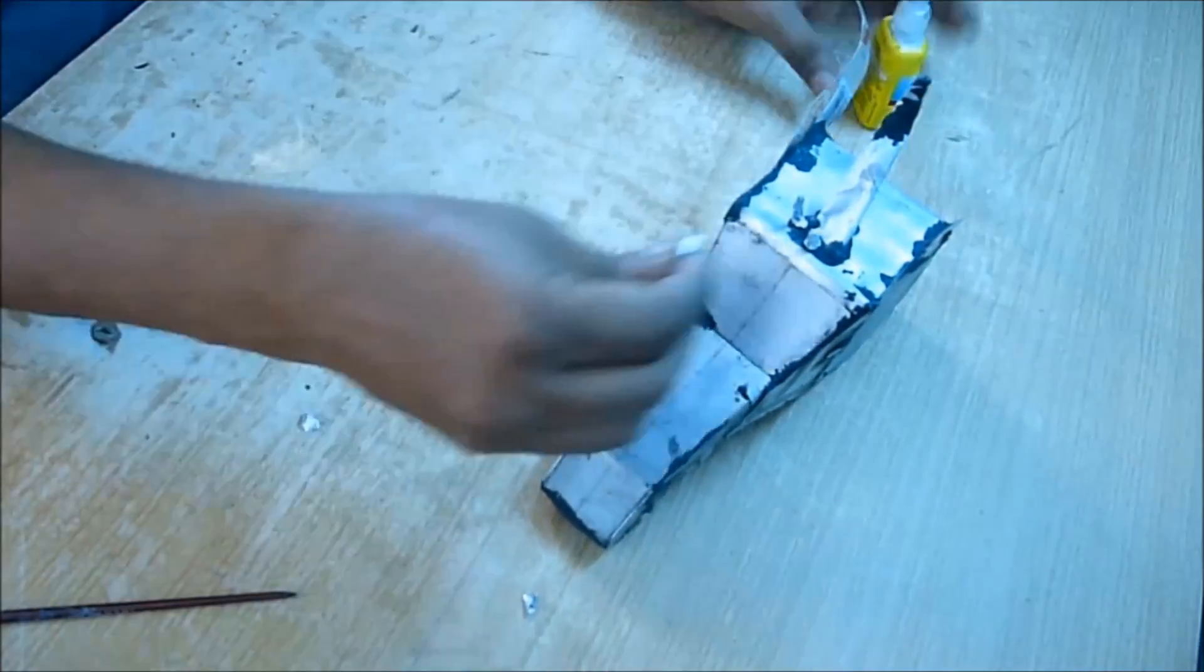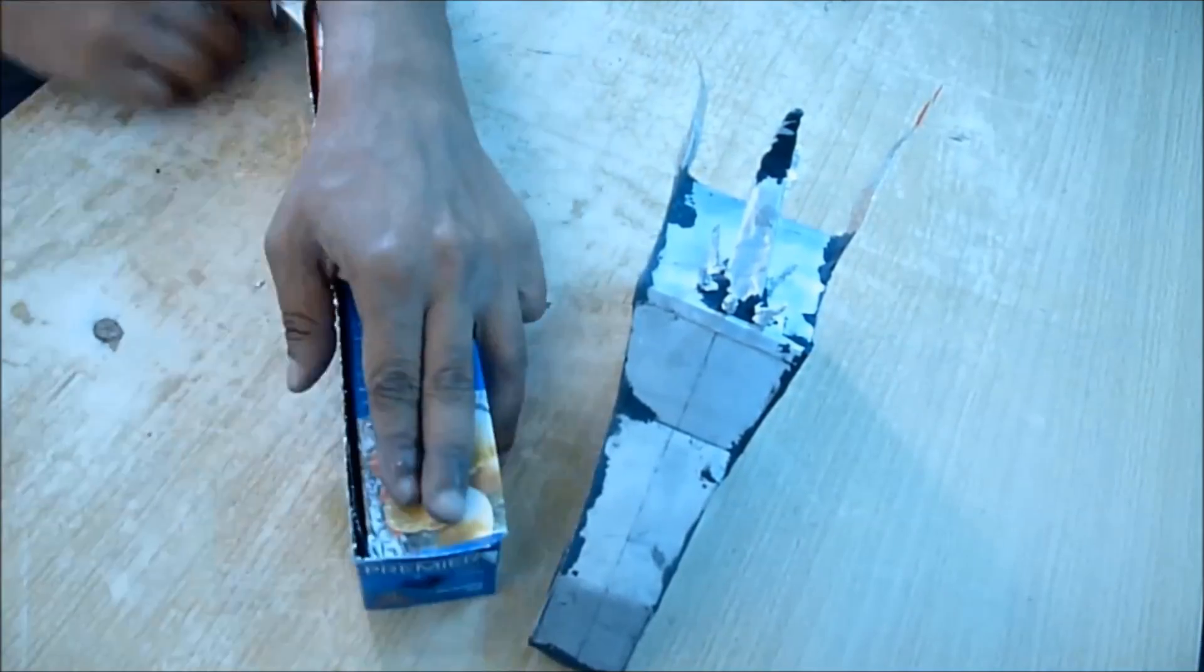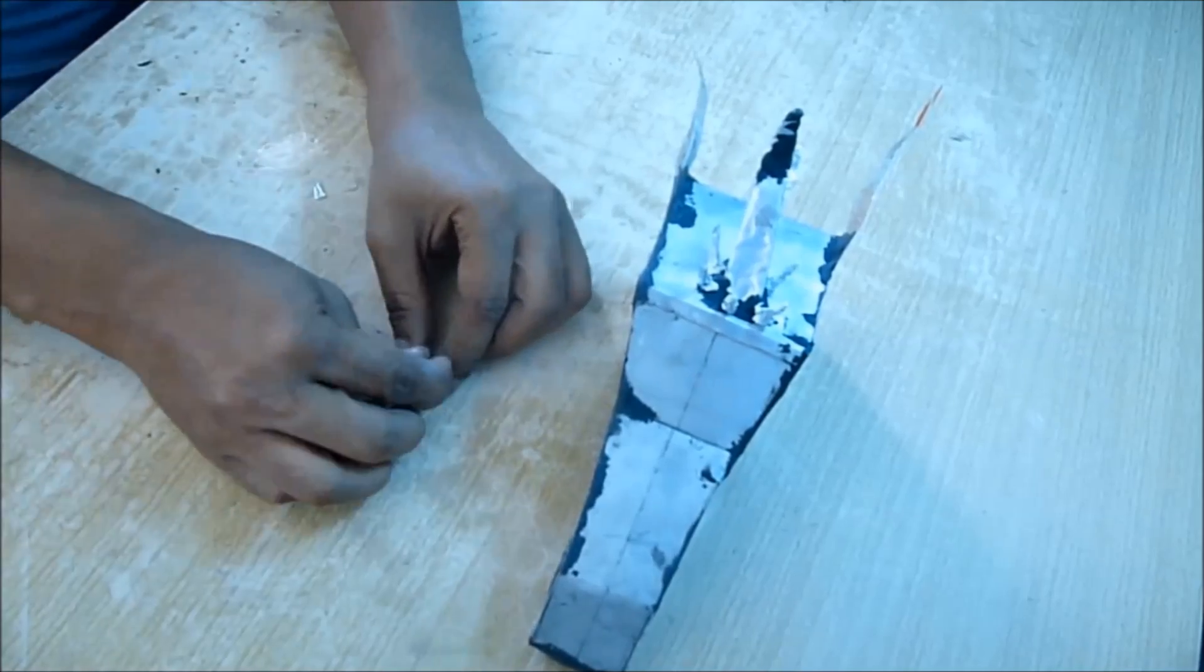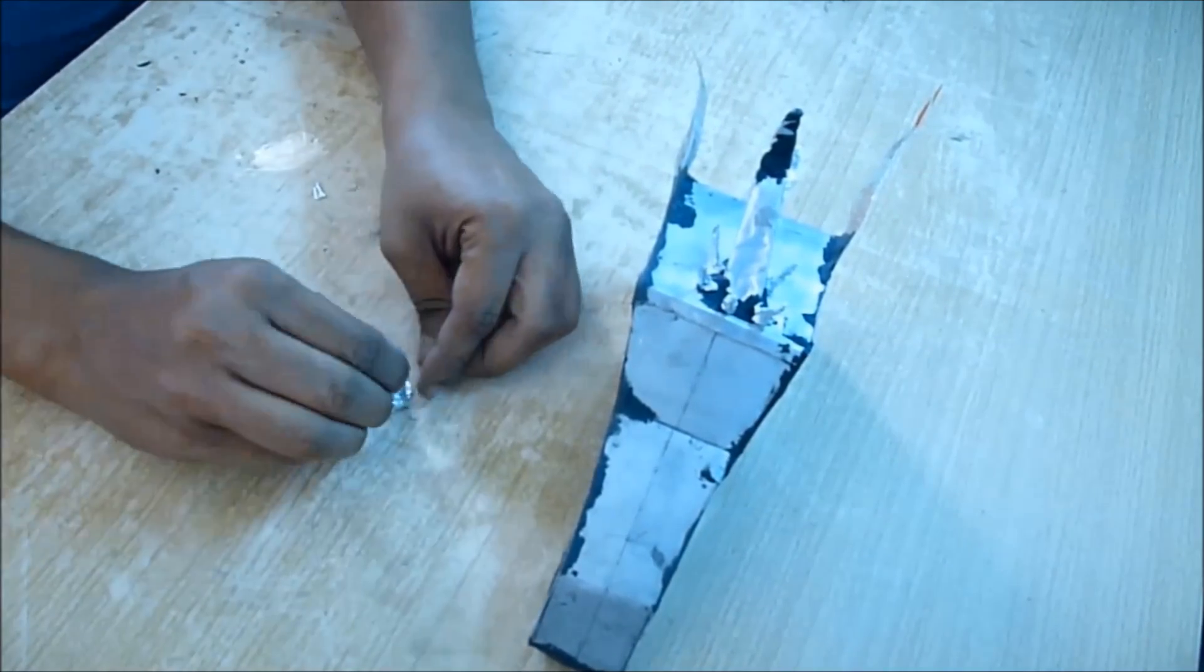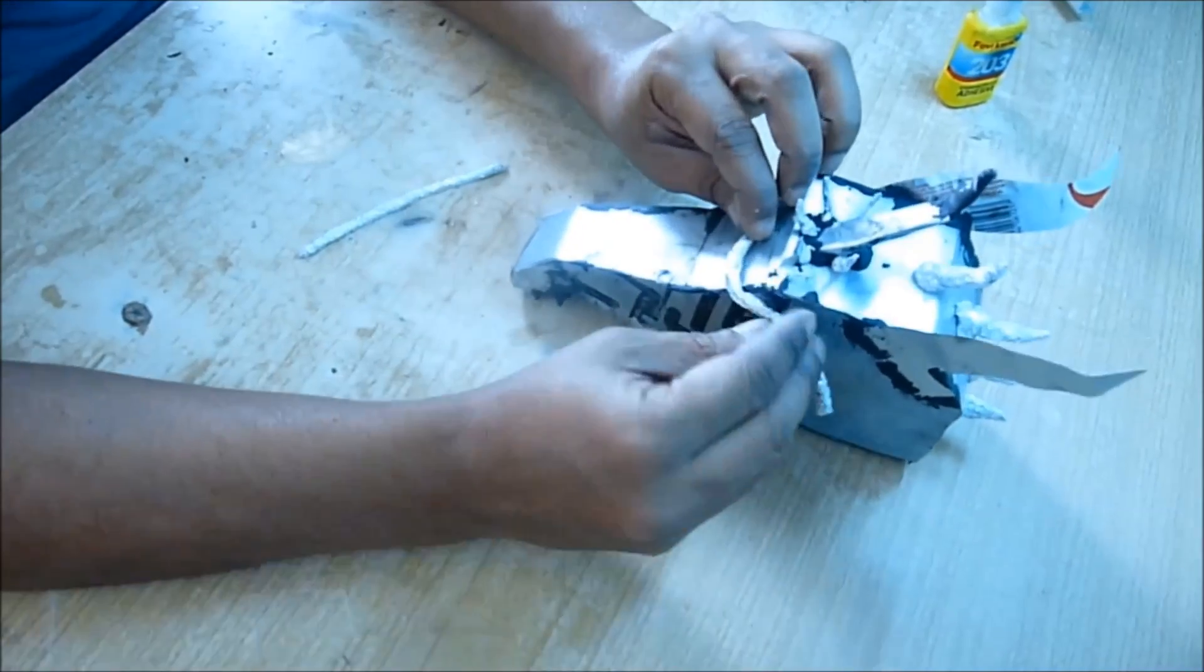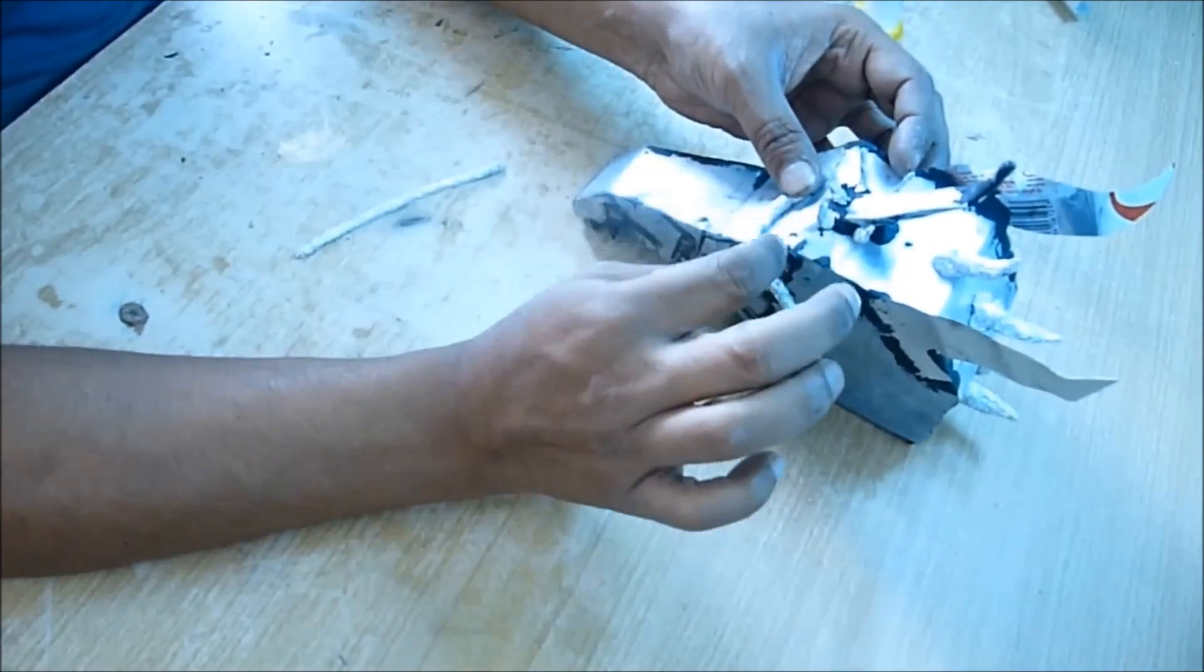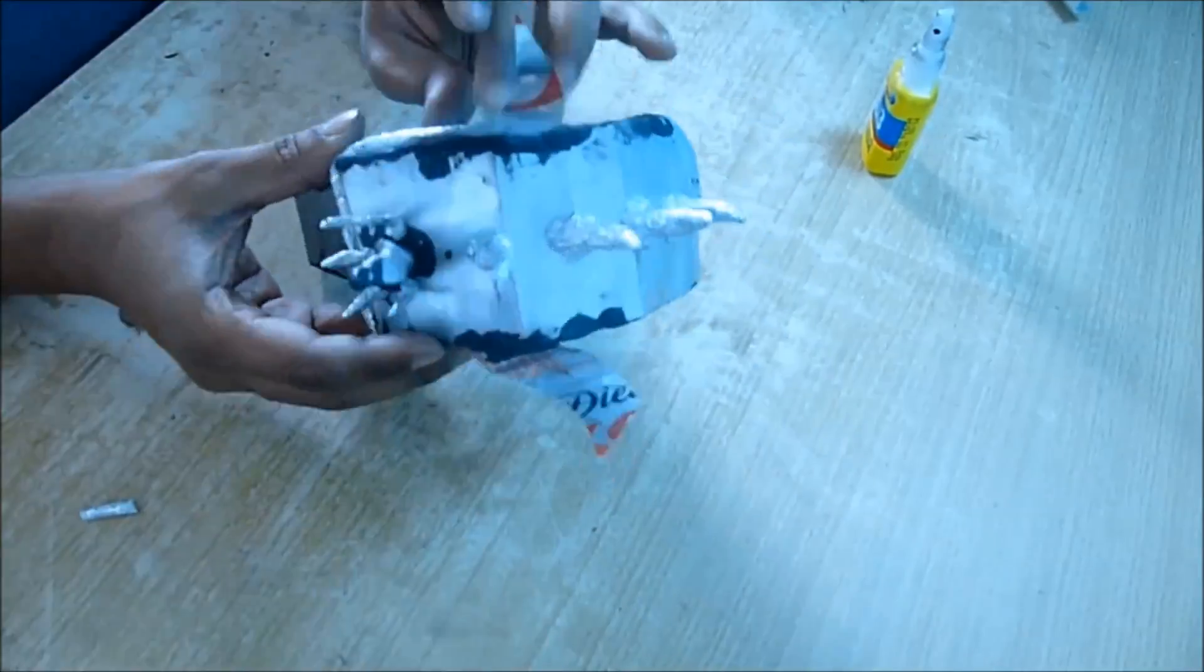For big thorns, take more aluminum foil, give it nice shape like a thorn and glue those at the back of the head or on the shoulder or even on the neck part. Now I have used some roll of aluminum foil to make the eyebrow. First glue the foil and then give it a 3D shape using M seal.